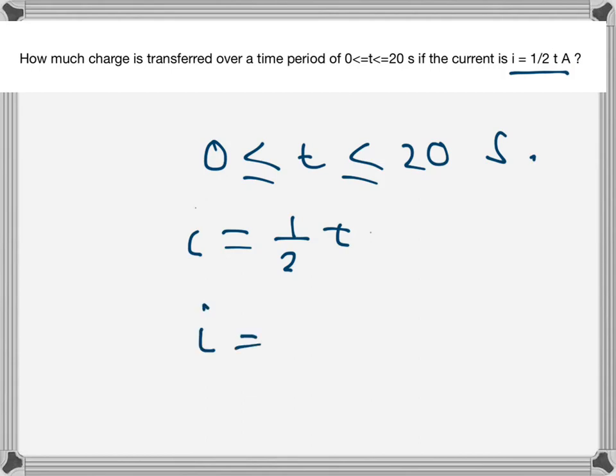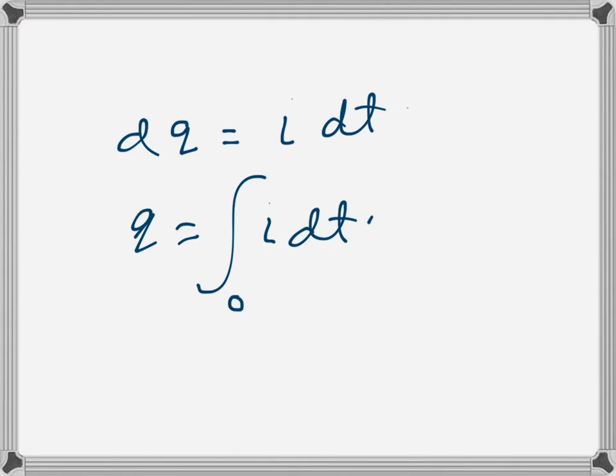We know that i is equal to dq over dt, so this can be written as dq equals i dt. So q will be the integration of i dt, and the integration limits will be 0 to 20.